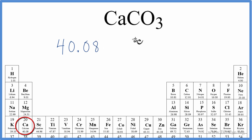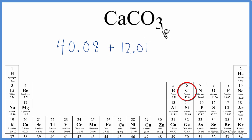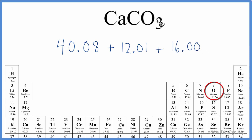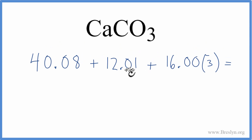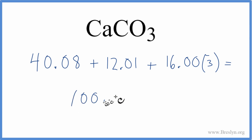I won't write those units till the end though. We have the one carbon that has a mass of 12.01 grams per mole, plus oxygen at 16.00, and we have three oxygen atoms. So we're going to multiply that 16 by 3. So 3 times 16 plus these numbers gives us a molar mass for calcium carbonate of 100.09 grams per mole.